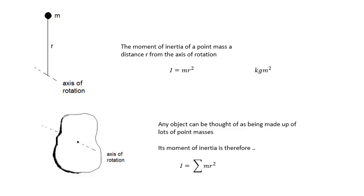Any object can be thought of as being made up of lots of point masses. Basically, you just add together all these little moments of inertia. The moment of inertia of any object about any axis is I equals Σmr², where m is the mass of each little bit and r is the distance from the axis. Sigma mr².